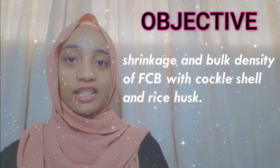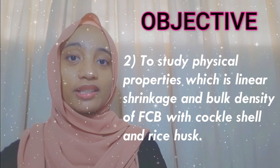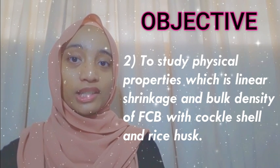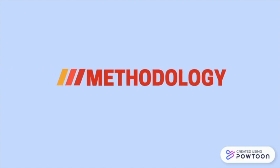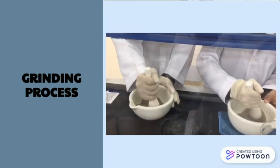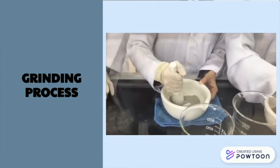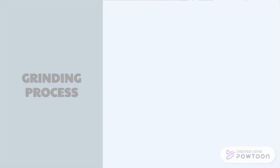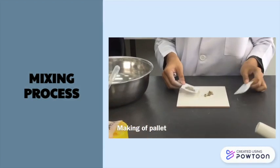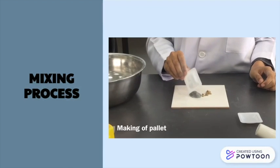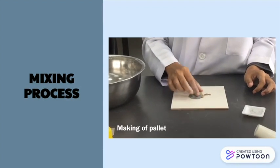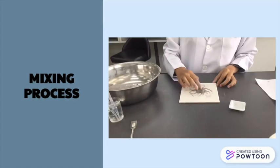The second objective is to study the physical properties — which is linear shrinkage and bulk density — of fire industrial waste clay brick with coccal shell and rice husks. For methodology, both rice husks and coccal shell materials undergo the same processes. After cleaning, drying, and heating, the coccal shell and rice husks were ground with mortar and pestle in circular motion. Then they were sieved into submicron powder. During the mixing process, all the materials in submicron size were mixed together according to the respective coccal ratio by weight percentage.